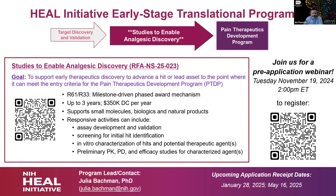The Studies to Enable Analgesic Discovery program is a relatively new R61/R33 mechanism — a milestone-driven, phased award program. It is good for up to three years with a maximum of $350,000 direct costs per year. It supports small molecules, biologics, and natural products, with activities including assay development and validation, screening for initial hit identification, in vitro characterization, and preliminary pharmacokinetics/pharmacodynamic efficacy studies. There's a webinar for this next Tuesday. Upcoming 2025 receipt dates are January 28th and May 16th. Contact Dr. Julia Bachmann for questions.